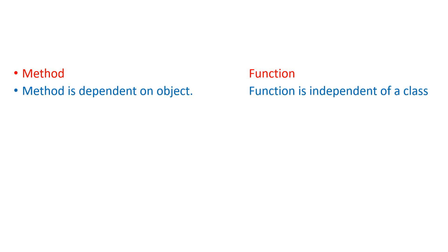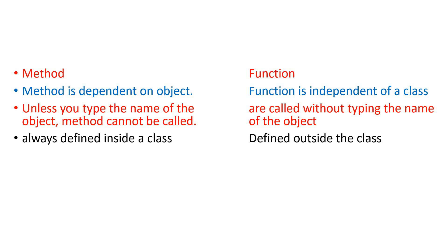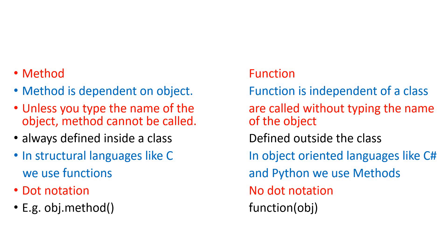Method is dependent on an object while function is independent of an object and its class. Unless you type the name of the object, a method cannot be called, while functions are called without typing the object name. Methods are always defined inside a class and functions always outside. In structural languages like C we use functions; in object-oriented languages like C# and Python we use methods. Python is a hybrid language so you can use both. Methods are always used with dot notation — for example obj dot method — while functions are not used with dot notation.